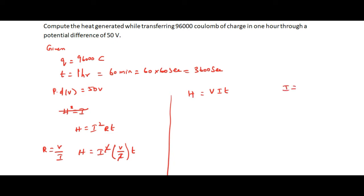I already know another formula: I equals Q by t, the rate of flow of charge. Substituting, H equals V times Q by t times t, which simplifies to H equals V times Q.